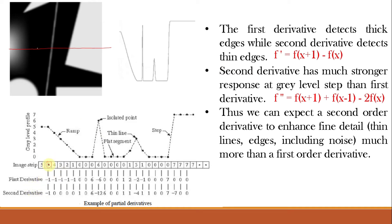Now let us find the second derivative using the equation f(x+1) + f(x−1) − 2f(x). For f(x) = 5: f(x+1) = 4, f(x−1) = 5, so 4 + 5 − 2×5 = 9 − 10 = −1. For f(x) = 6: f(x+1) = 0, f(x−1) = 0, so 0 + 0 − 2×6 = −12. For f(x) = 3: f(x+1) = 1, f(x−1) = 1, so 1 + 1 − 2×3 = 2 − 6 = −4. For f(x) = 7: f(x+1) = 7, f(x−1) = 7, so 7 + 7 − 2×7 = 14 − 14 = 0.